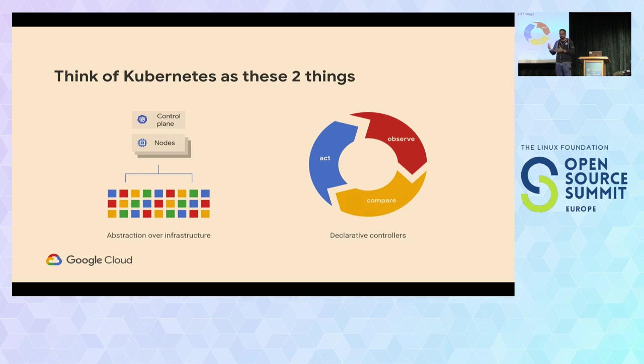If you have used Kubernetes before, you know that basically you write the YAML file, submit it to the cluster, and as long as your YAML file is valid and doesn't have any errors, things magically happen behind the scenes.